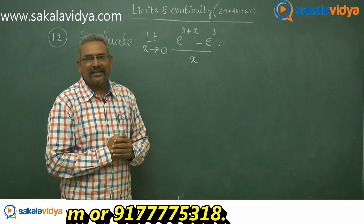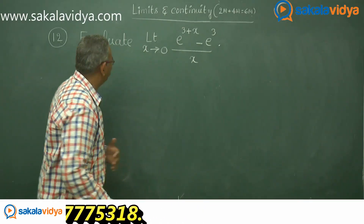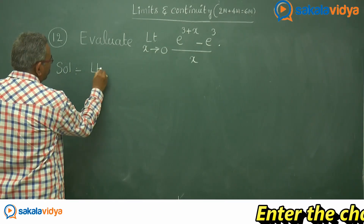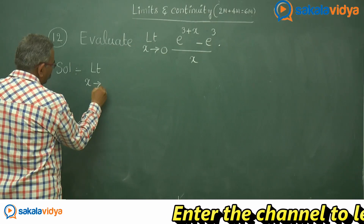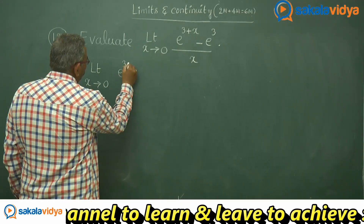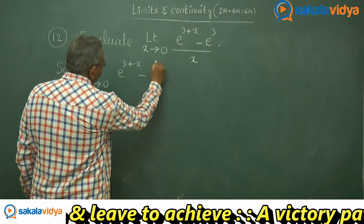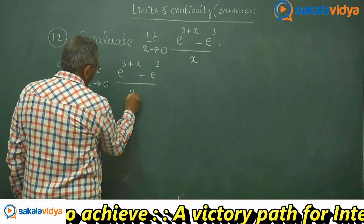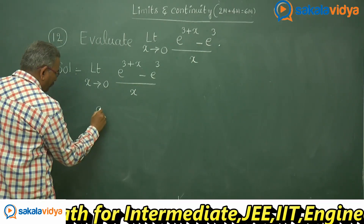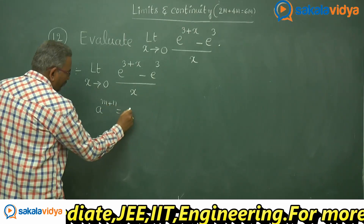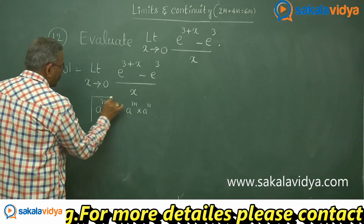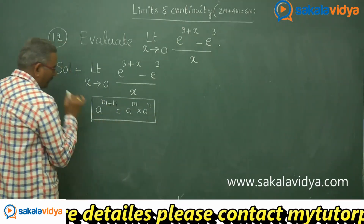Let us observe the solution of this problem. Solution: limit x tends to 0, e power 3 plus x minus e cube upon x. We have the formula: a power m plus n equals to a power m into a power n. This is one of the algebraic formulae.